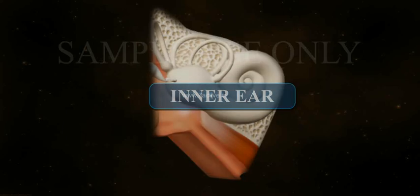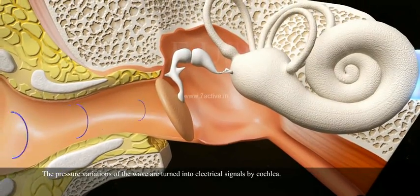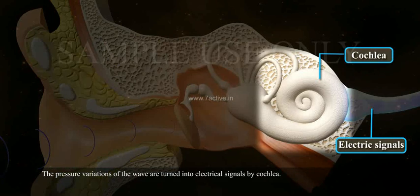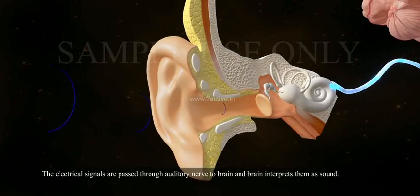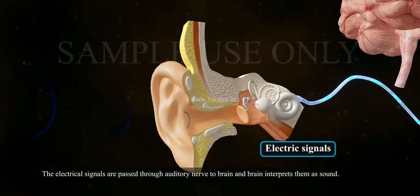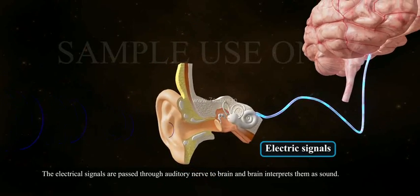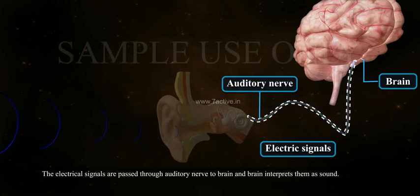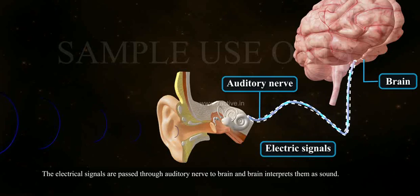The pressure variations of the wave are turned into electrical signals by the cochlea. The electrical signals are passed through the auditory nerve to the brain, and the brain interprets them as sound. This is all about the auditory mechanism of the human ear.